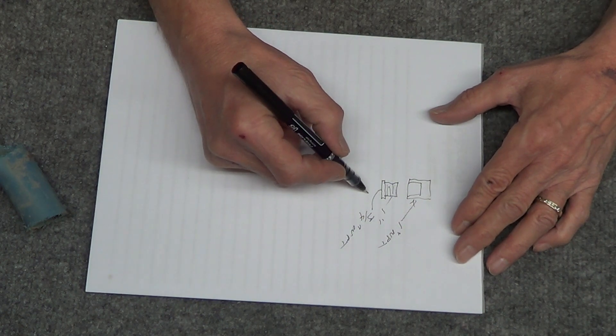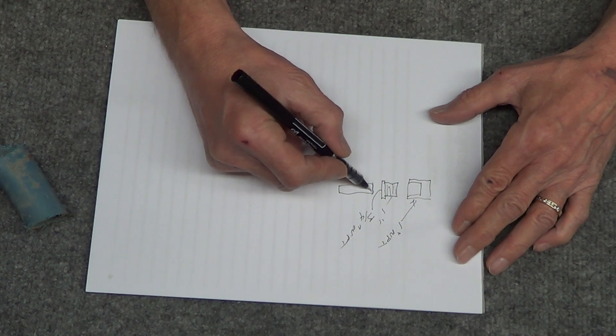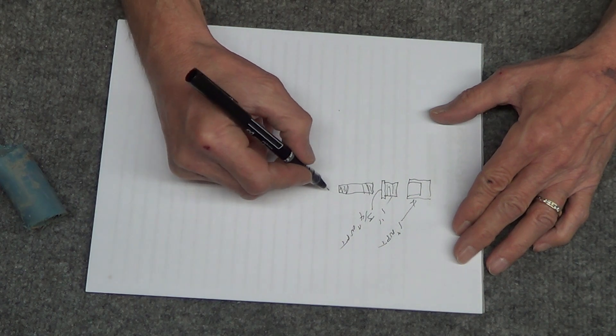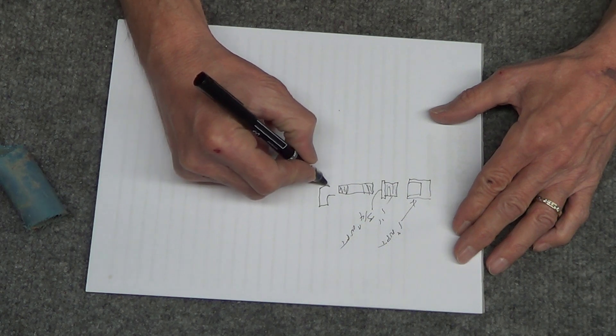You can get brass, which is what I did. Just the shortest extension you can with threads on both ends. Thread that in there. Get a 90, three quarter 90.